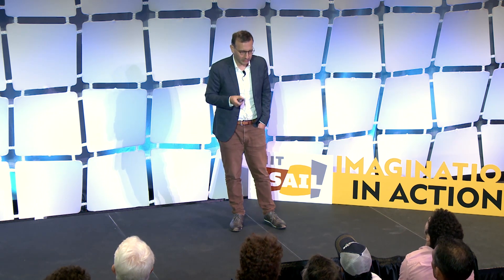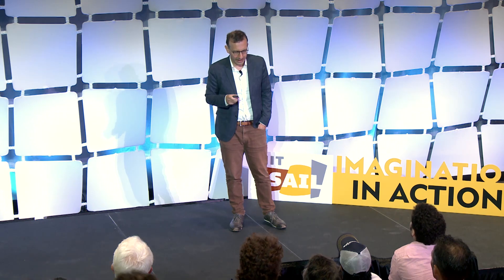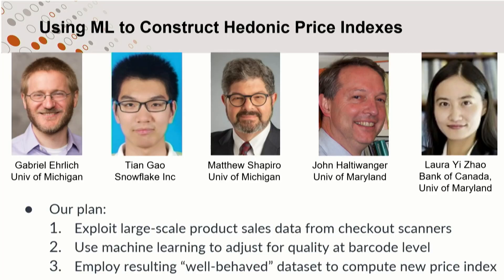Here's how it works. This is work I did with a number of collaborators: Gabe Erlerich, Tian Gao, Matthew Shapiro, John Halterwanger, and Laura Zhao. The critical idea is that we're going to take a lot of data sets from supermarket checkout scanners, and use machine learning to adjust for quality automatically for every individual product we see. That quality-adjusted price series will then be used to create the price index.